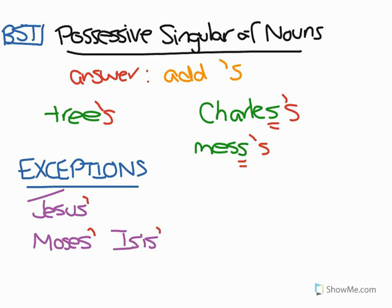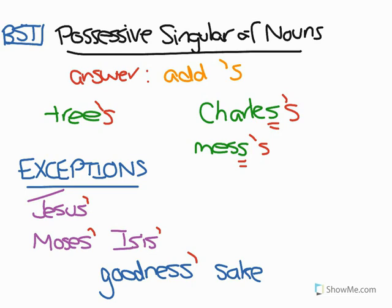One final exception is when you have a word in a sentence that ends in an S sound, like 'goodness,' and you want the possessive singular with a following word that starts with an S. So for 'for goodness' sake,' you just put an apostrophe — it's not 'goodness's.' Another example of this is 'righteousness' sake.'